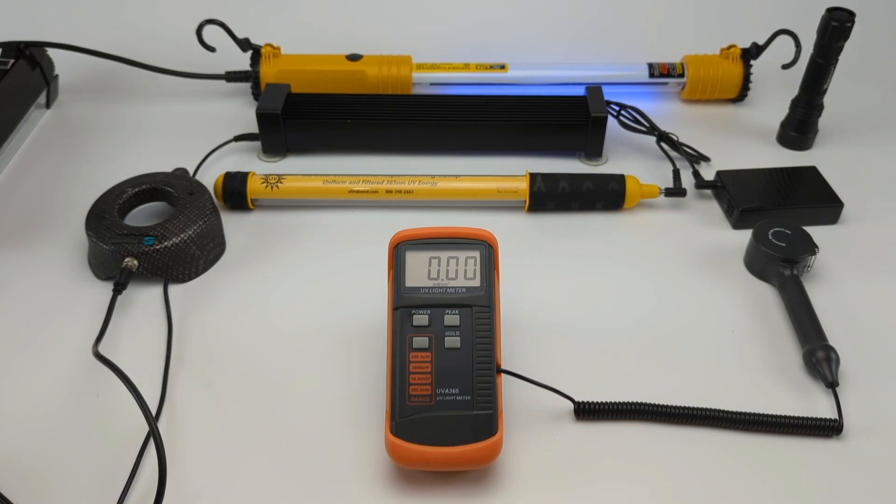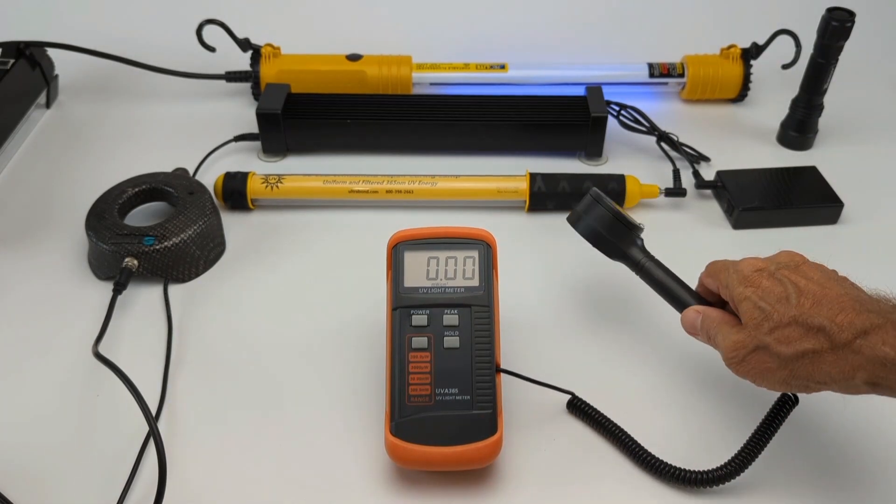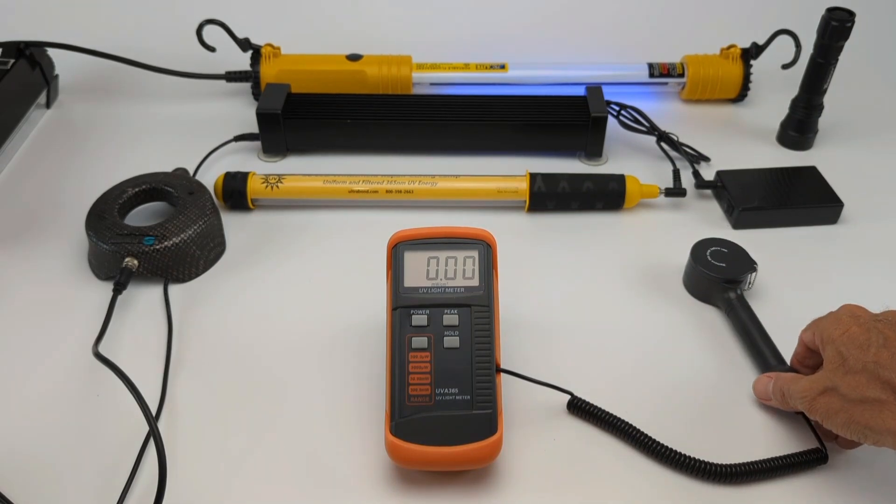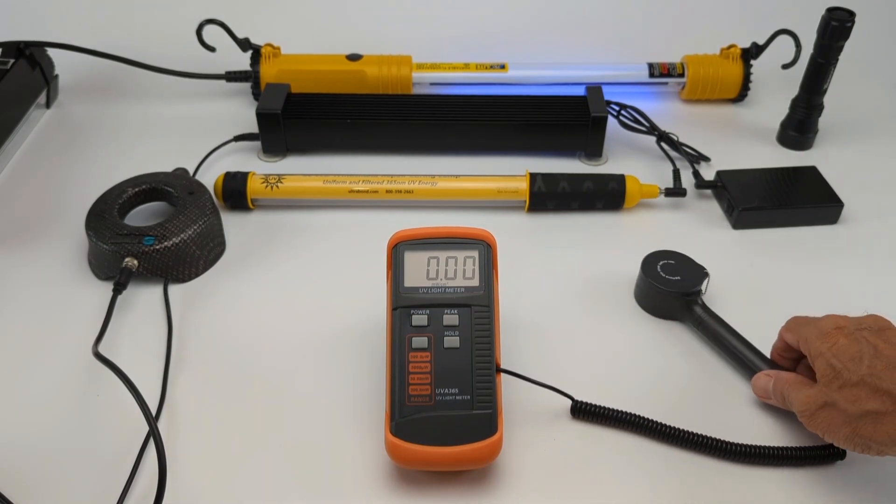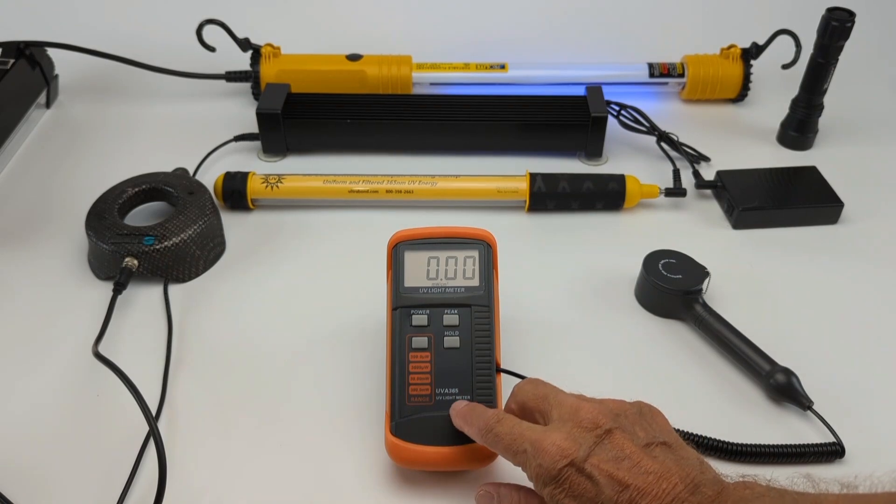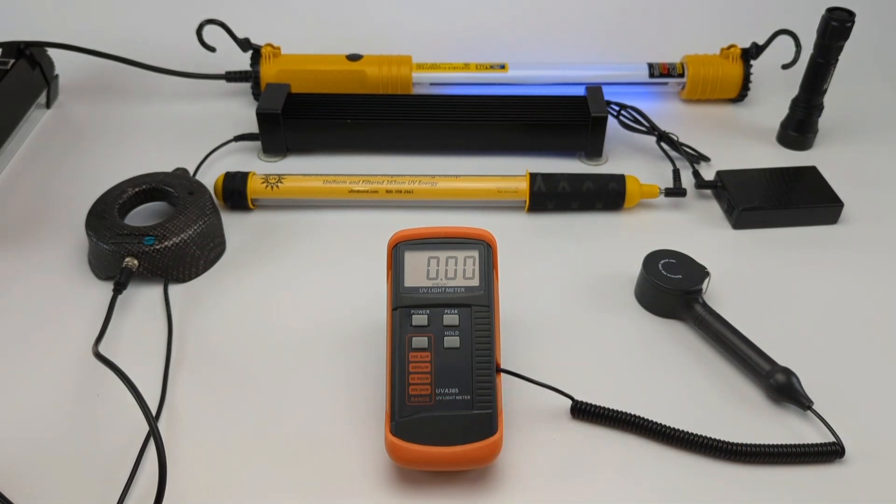If you're outside, you can use it to see how much energy you're getting from the Sun. The Sun is our number one recommendation whenever you want to cure windshield repair because the energy is uniform. This will also allow you to test your light to see when your batteries are low and when you need to change the battery or recharge it.